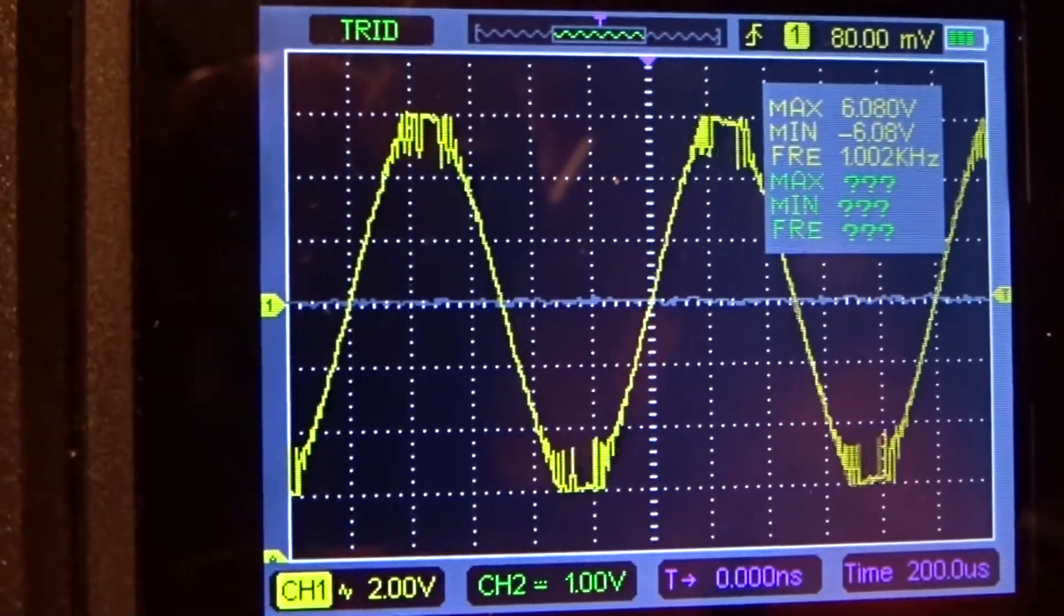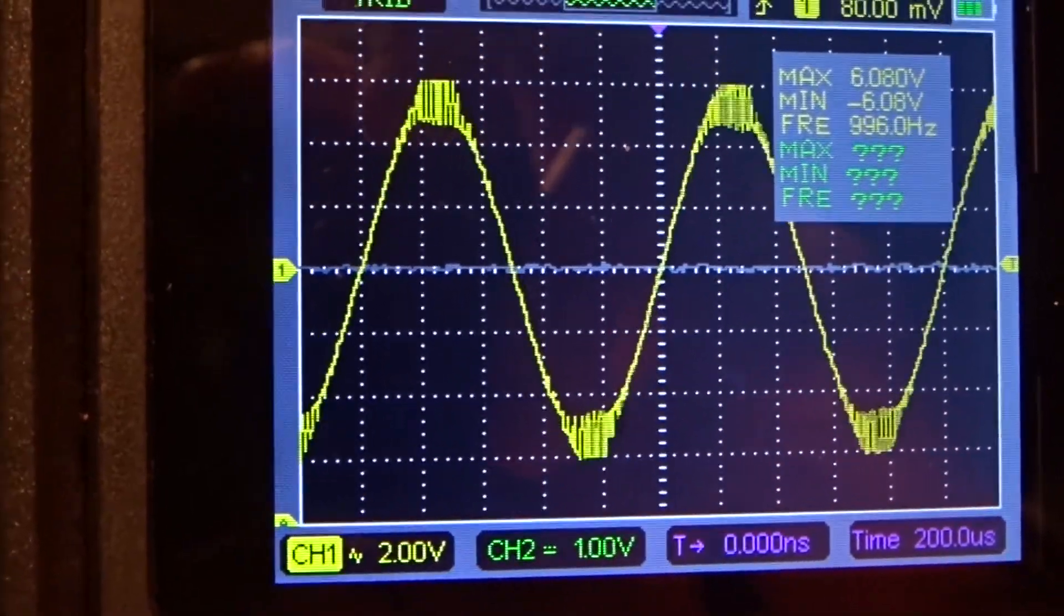6.00V means 60V. The amplifier clips the signal at 60V.